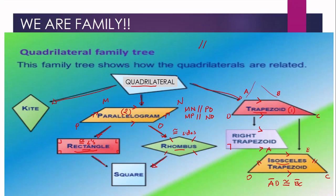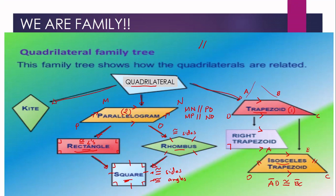Under both rhombus and rectangle is the square. A square has congruent sides and all angles are right angles, so it has congruent sides and congruent angles. A parallelogram with both congruent sides and congruent angles is a square. The square is under rhombus because it has congruent sides, and it is also under rectangle because it has congruent angles.